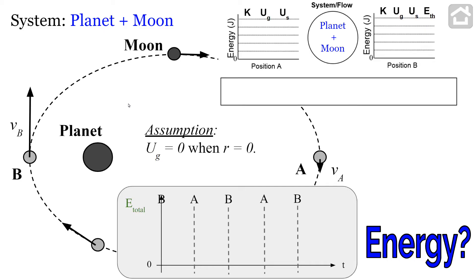We're first going to answer this question using energy ideas and energy conservation. We define the system as both the planet and the moon. Let's take the farthest position the moon is from the planet and call that position A, and the closest position we'll call position B. At position A it's moving the slowest, and at position B it's moving the fastest. At position A, the system has kinetic energy because the moon is in motion — let's say two bars of kinetic energy.